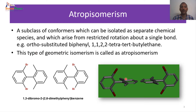Some examples are given here. This is a case of geometric isomerism also called atropisomerism. We have 1,3-dibromo-2,2,6,6-dimethylphenylbenzene. This is a biphenyl unit with four substituents. The presence of ortho substituents is crucial for this kind of atropisomerism. In some cases, meta substituents also contribute. We will mainly be looking at ortho-disubstituted biphenyls.